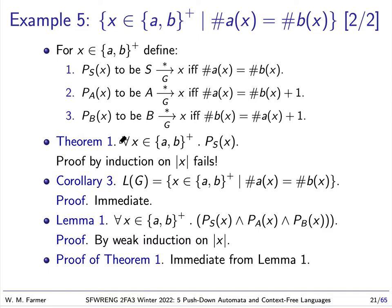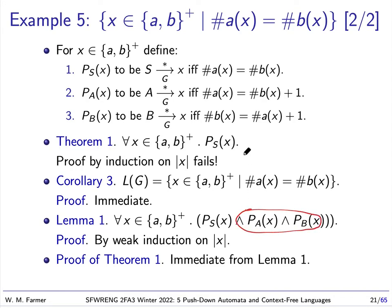If we could prove Theorem 1, we immediately get Corollary 3: the language of our grammar equals the language of all non-empty strings of A's and B's with the same number of A's and B's. The way we're going to prove Theorem 1 is by proving Lemma 1: for all non-empty strings, P_S(x) holds AND P_A(x) holds AND P_B(x) holds. Lemma 1 is a stronger statement than Theorem 1.